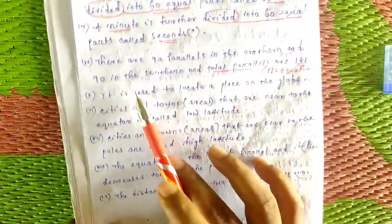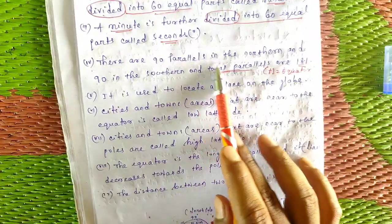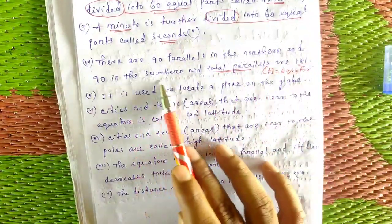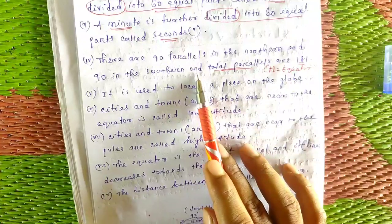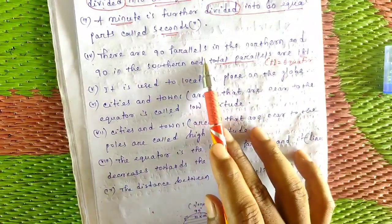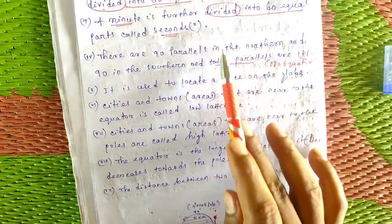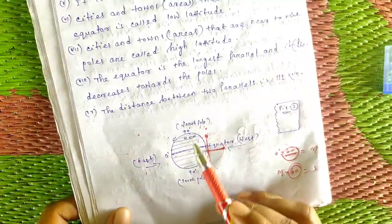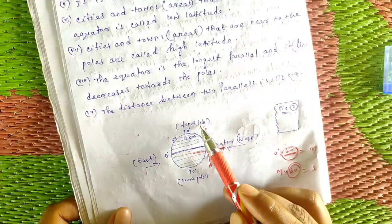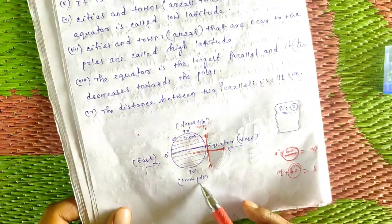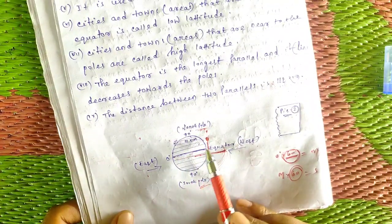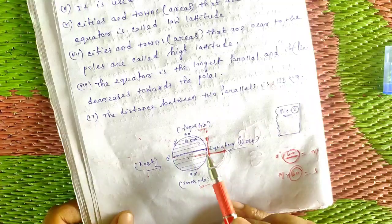There are 90 parallels in the northern hemisphere and 90 in the southern hemisphere, running from the equator towards the north pole and south pole respectively.